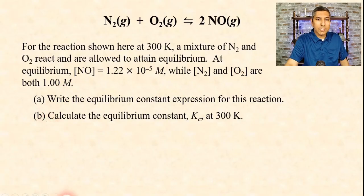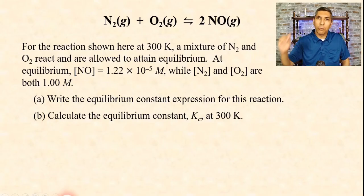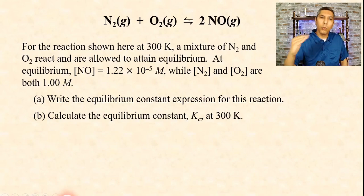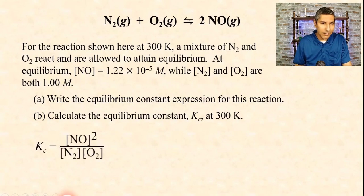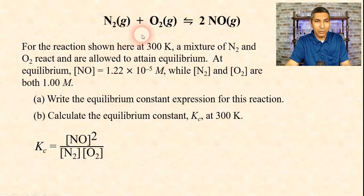Part A says: write the equilibrium constant expression for this reaction. Just like we had before, Kc equals products over reactants raised to the power of the coefficient. So that means Kc equals the concentration of NO, quantity squared, all over the concentrations of N2 times O2. That's our answer to part A.